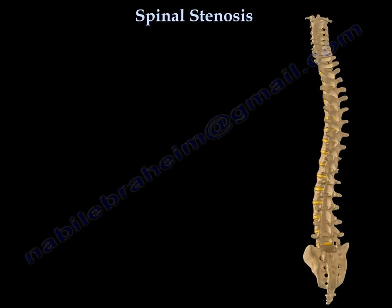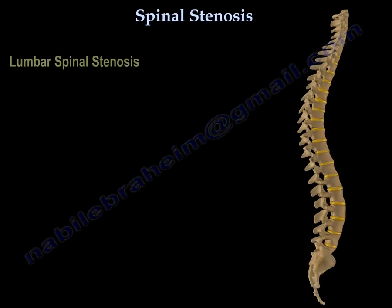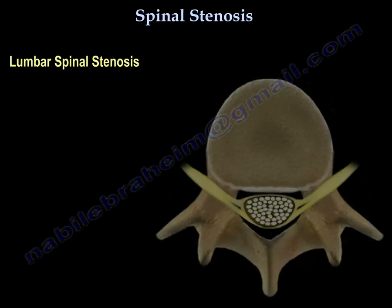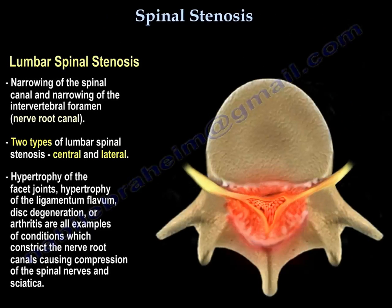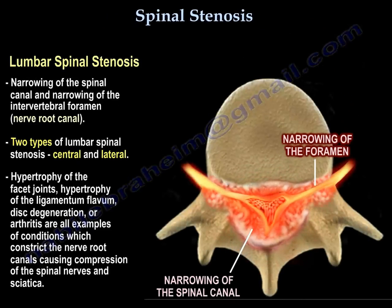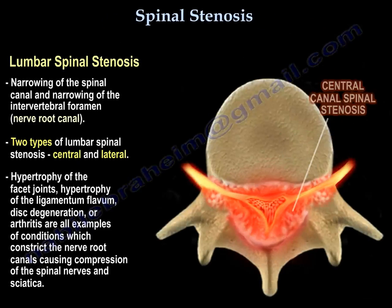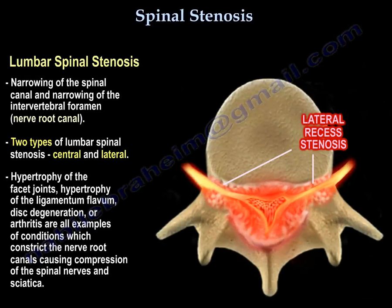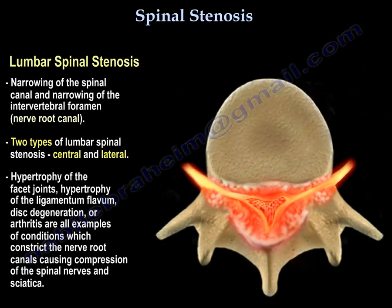Spinal stenosis is the narrowing of the spinal canal and narrowing of the foramen. There are two types: central stenosis and lateral stenosis. It occurs because of hypertrophy of the facets and the ligamentum flavum, and spine arthritis.